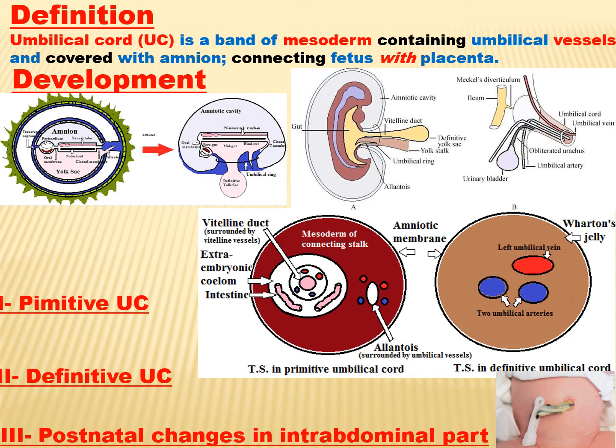The development of the umbilical cord passes through two main stages, and the last stage occurs in the intra-abdominal part after birth. We can organize this under three titles: primitive umbilical cord, definitive umbilical cord, and postnatal changes in the intra-abdominal part.